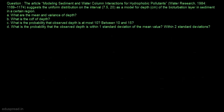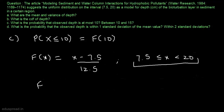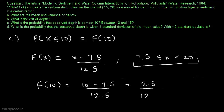In part C, we have to find the probability that the observed depth is at most 10. This means we need P(X ≤ 10) = F(10). Since x = 10 lies in [7.5, 20], we use F(x) = (x − 7.5)/12.5. So F(10) = (10 − 7.5)/12.5 = 2.5/12.5 = 0.2. The probability that X is less than or equal to 10 is 0.2.